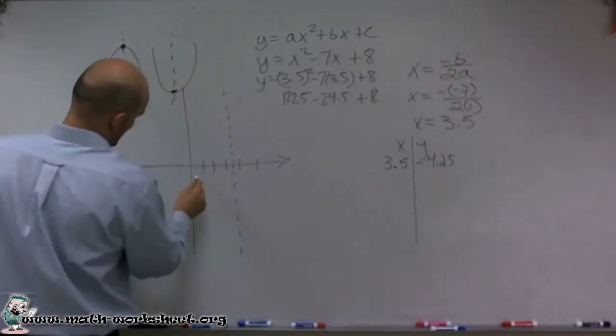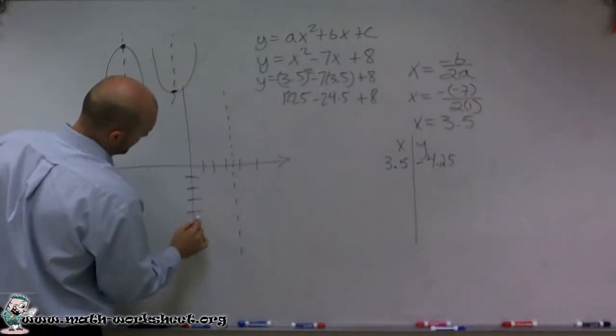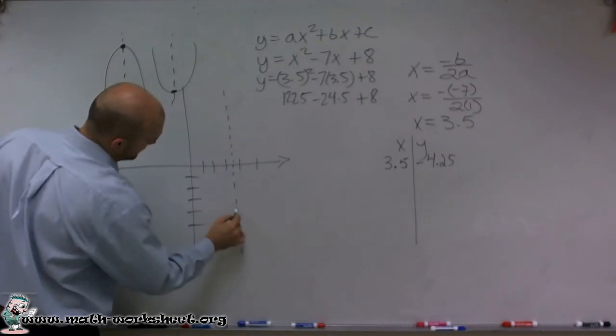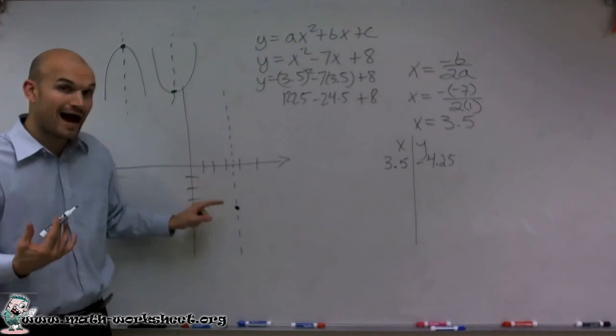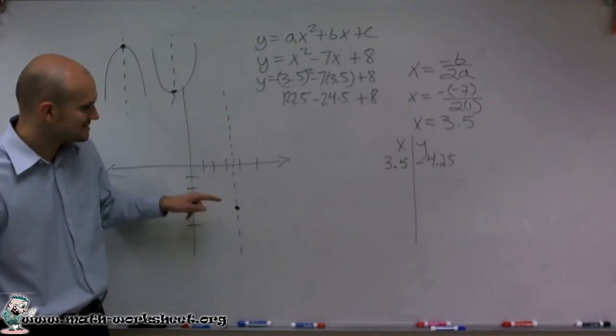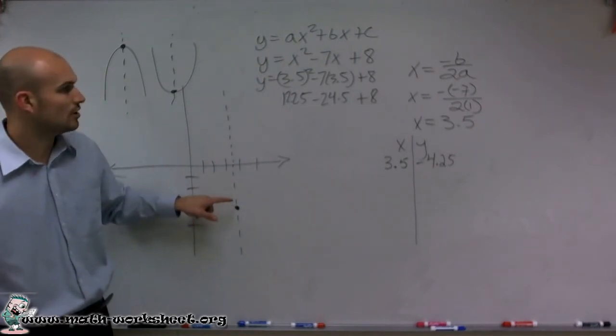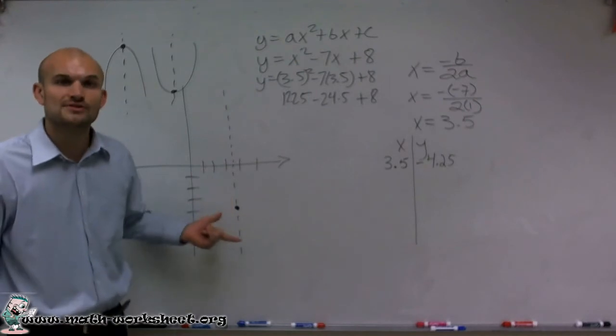I'm going to sketch that graph. It's going to be roughly right around here. That means my vertex, the low point or high point right now on my graph, is at 3.5, negative 4.25.